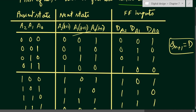Whatever be the next state output we need in the A1(t+1) column, we must apply it to DA1. And whatever next state we want at A0, it should be applied at DA0. Now we have to find out the equations for DA2, DA1, and DA0 using K-maps.